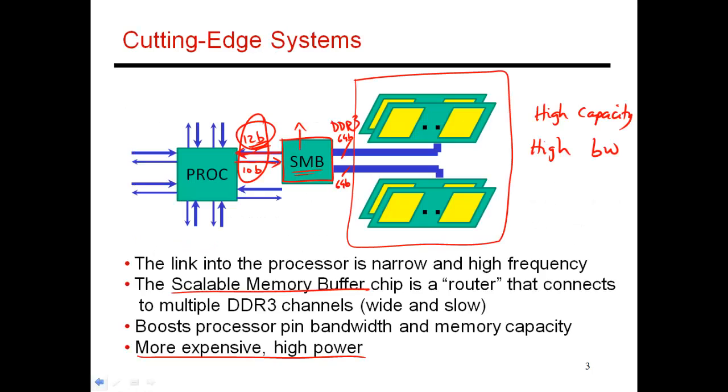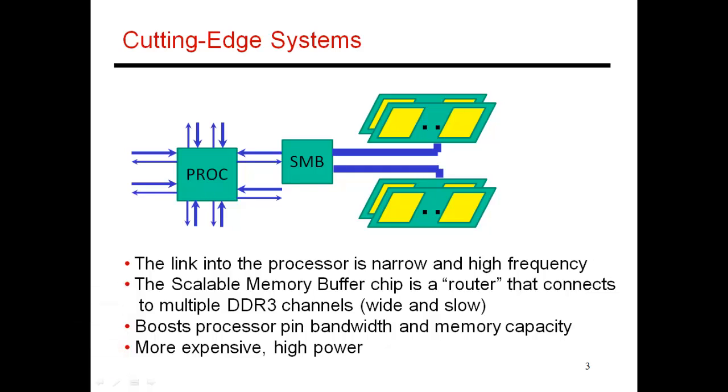What 3D stacking does is you have a design similar to this. Let me just clear this out a little bit. You have a design very similar to this, where you have narrow links, narrow high speed links coming out of the processor and terminating in a logic chip like the SMB. Then what you're doing is on top of this logic chip, you are attaching a whole bunch of DRAM chips, DRAM memory chips. This is called 3D stacking technology.